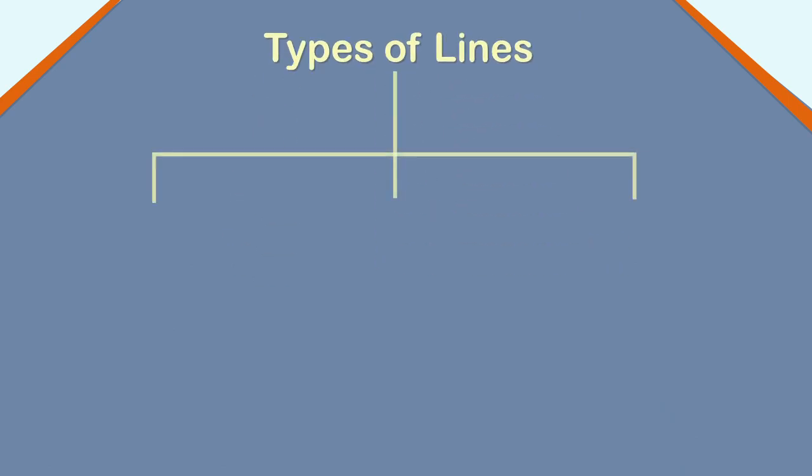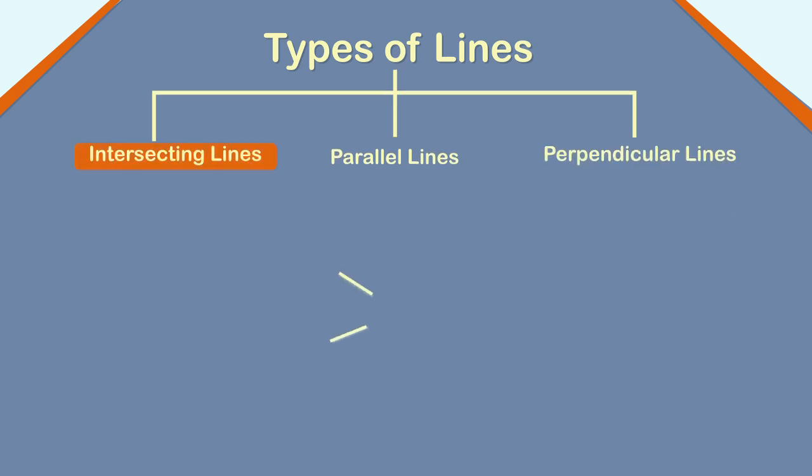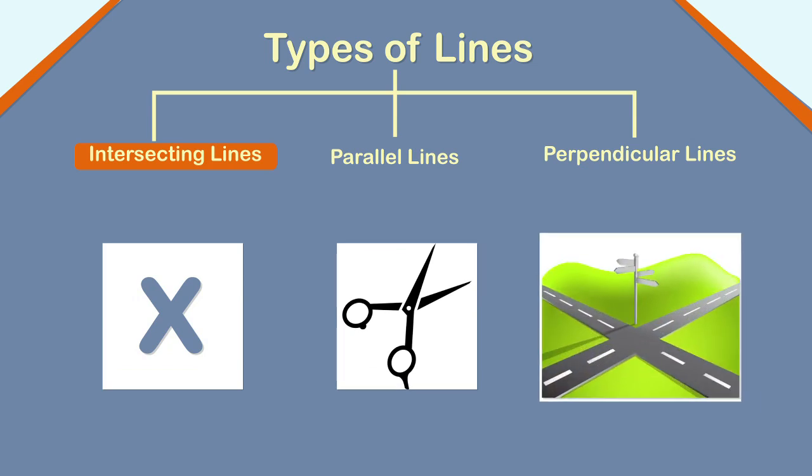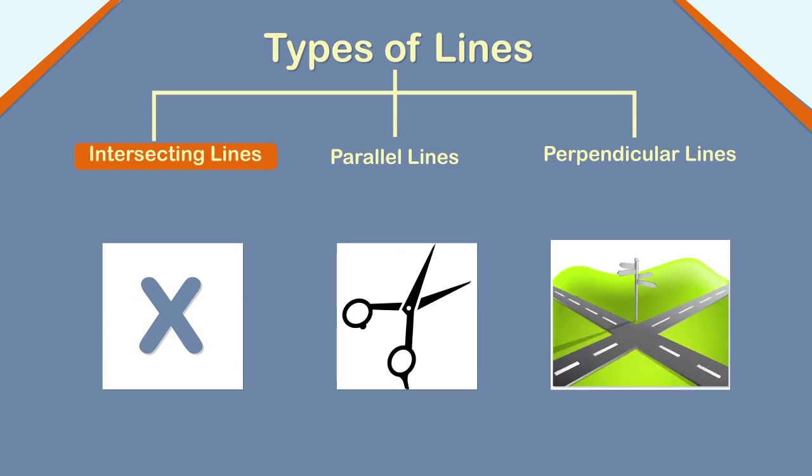There are three types of lines. Intersecting lines. Parallel lines. Perpendicular lines. Two lines which meet at a common point are called intersecting lines. Here, line AD and line BC intersect at the common point O. The letter X, a pair of scissors and the intersecting junctions on roads are examples of intersecting lines.